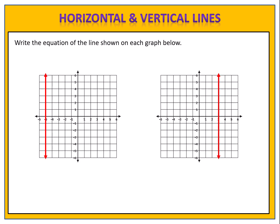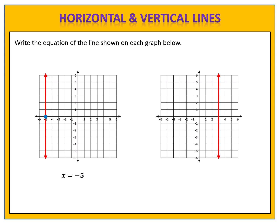Here are two examples for you to try. Can you write the equation of the lines shown on each of the graphs? The first graph passes through the x-axis at negative 5, and therefore has the equation x equals negative 5. The second graph passes through the x-axis at 3, and therefore has the equation x equals 3.